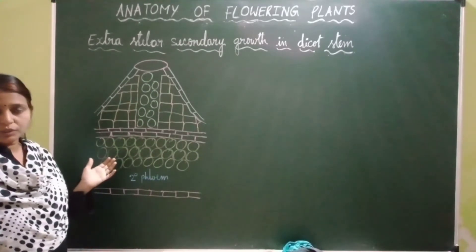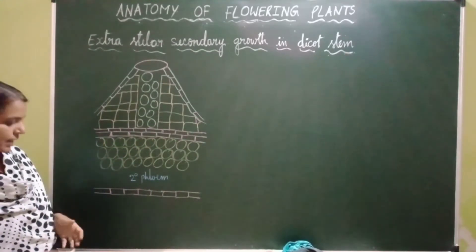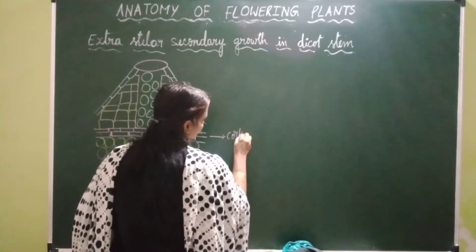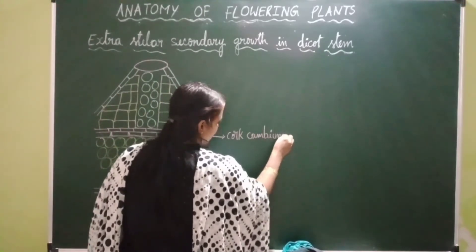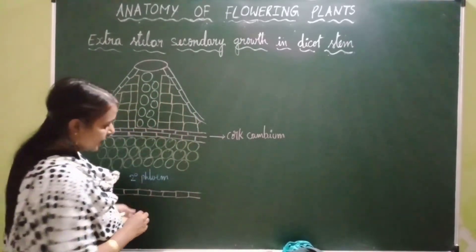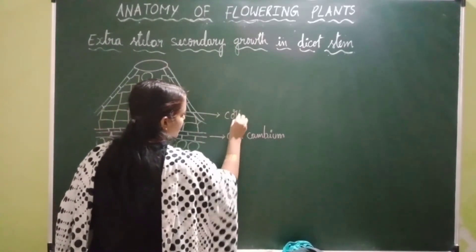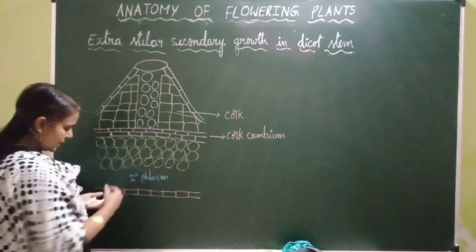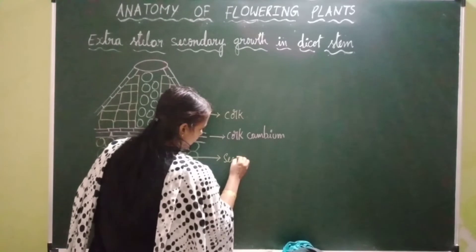Let's study all three types of tissues — cork cambium, cork cells, and secondary cortex — with the help of a diagram. Cork cambium is formed by the de-differentiation of cells present in the general cortex; it is a secondary meristem. Cork cambium cuts off cells towards the outer side and the inner side. Cells cut off towards the outer side undergo re-differentiation into cork cells, and cells cut off towards the inner side undergo re-differentiation into secondary cortex.